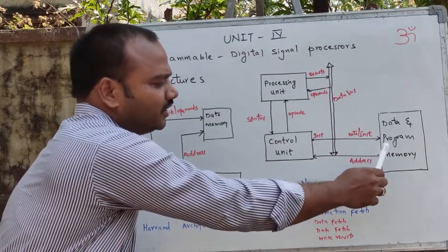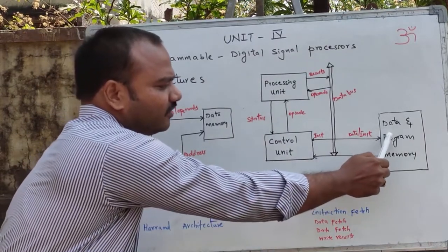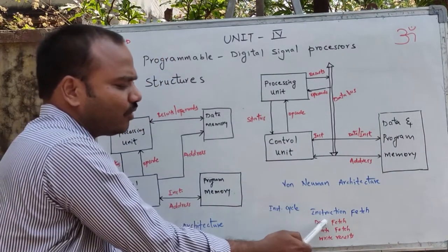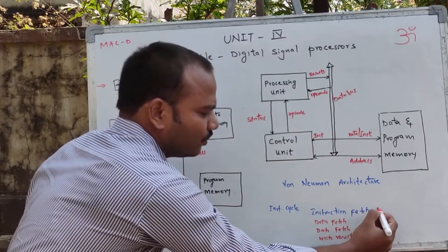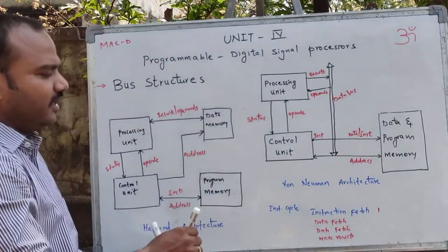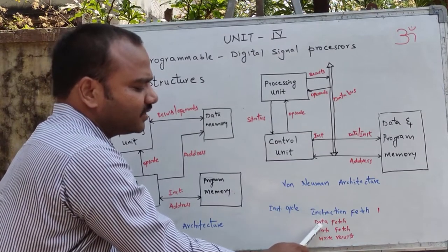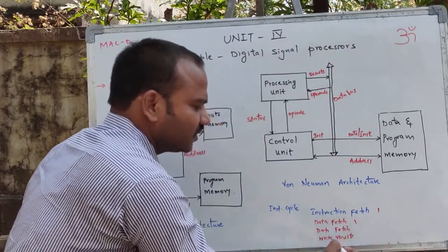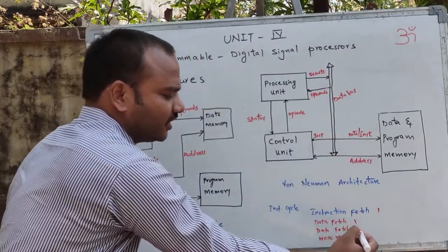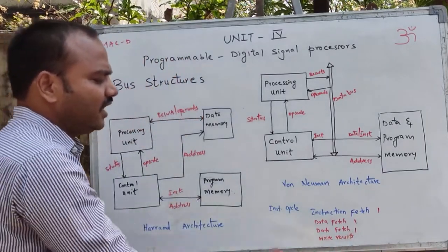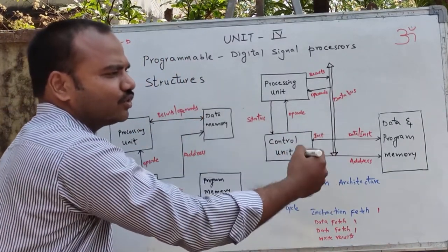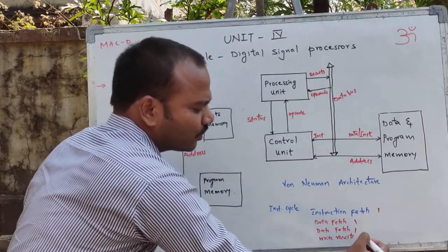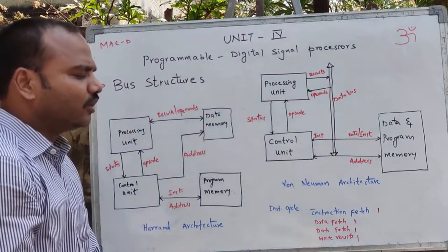Looking at the block diagram: the instruction fetch comes from the data and program memory to the control unit, requiring one clock cycle. The next step, data fetch, requires another clock cycle. The second data fetch requires a third clock cycle, and after execution of the MACD instruction, writing results back to program and data memory requires one more clock cycle.